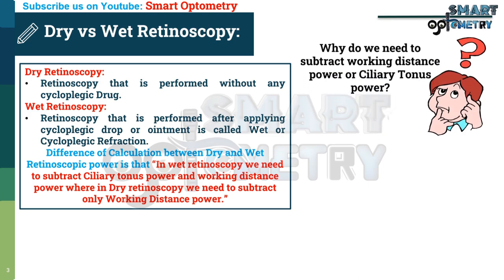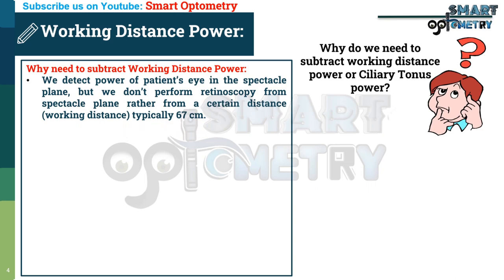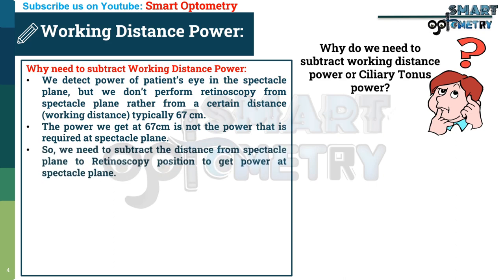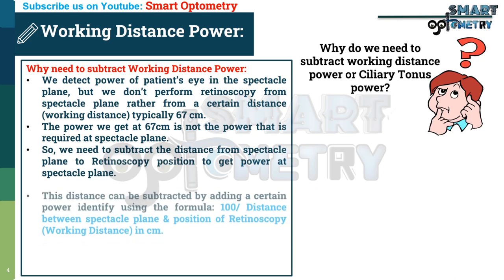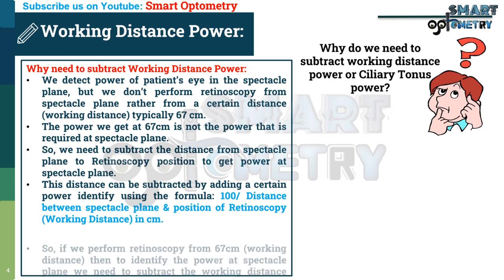Why do we need to subtract working distance power? We detect the power of the patient's eye in the spectacle plane, but we don't perform retinoscopy from the spectacle plane — rather from a certain distance called the working distance, typically 67 centimetres. The power we get at 67 centimetres is not the same power required at the spectacle plane. We subtract this distance using the formula: 100 divided by working distance in centimetres.